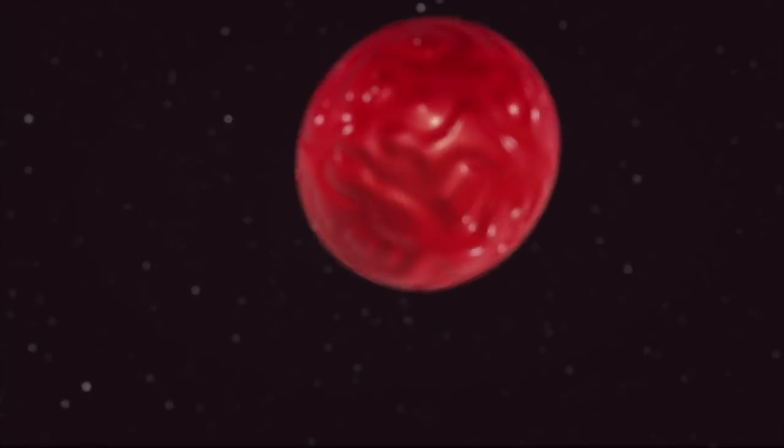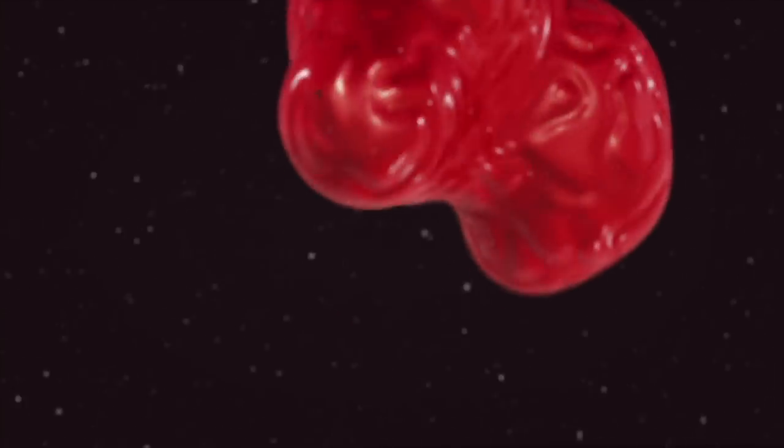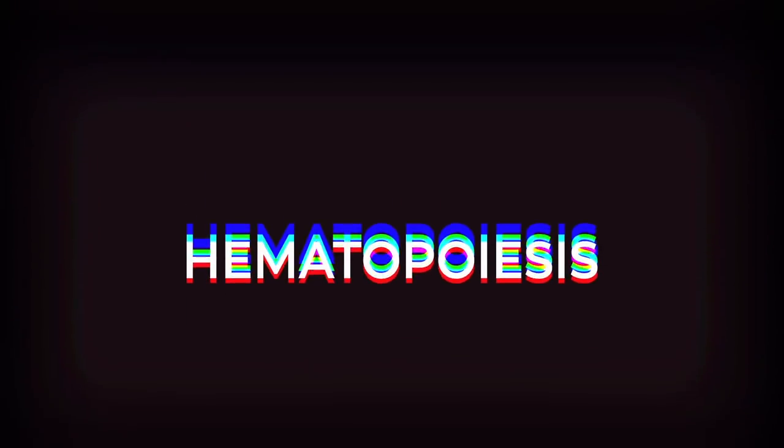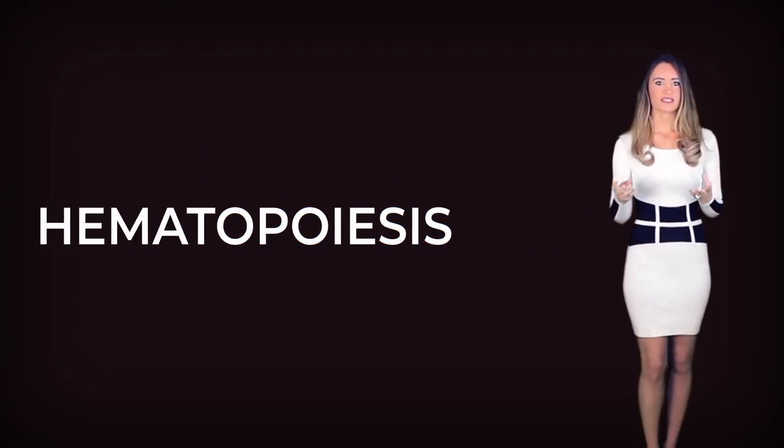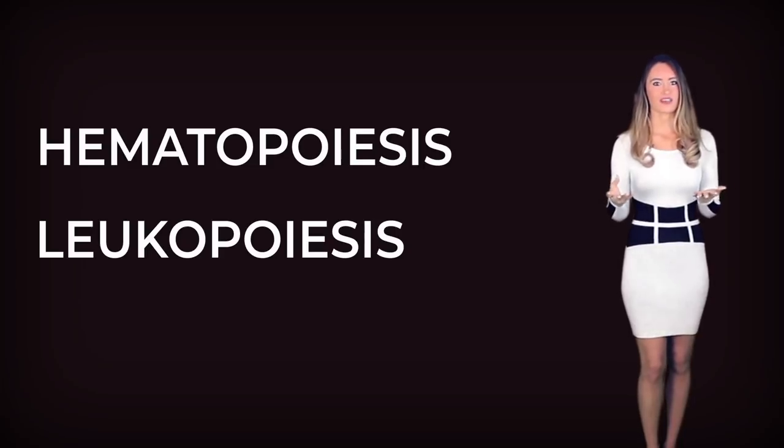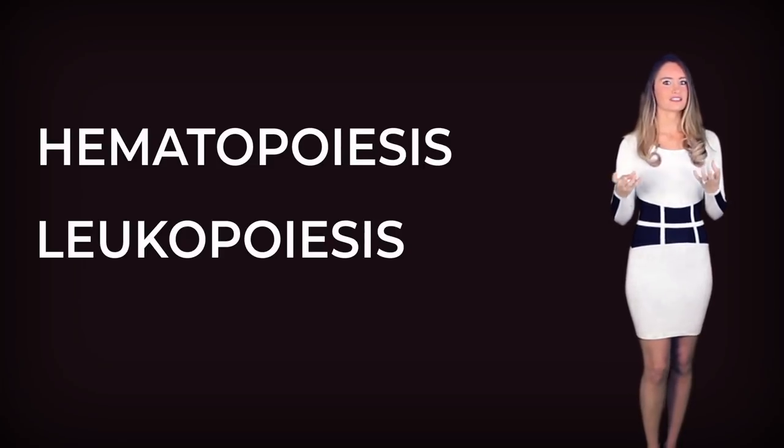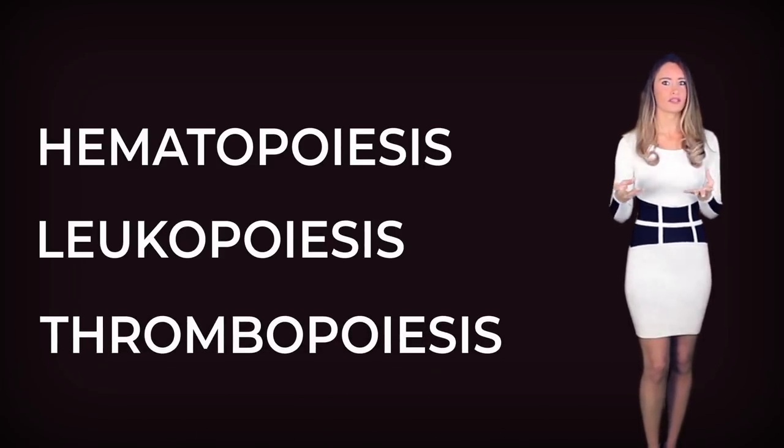Hemopoietic tissue. This is a tissue in which new blood cells are formed through a process called hematopoiesis. Hematopoiesis includes erythropoiesis, or the formation of red blood cells; leukopoiesis, or the formation of white blood cells; and thrombopoiesis, or the formation of platelets. All of these processes occur in red bone marrow.